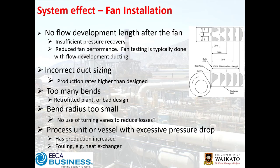Looking at the velocity profile right at the outlet of a fan, it's not uncommon on some fans to have a 10-to-1 ratio — perhaps 40–50 metres per second at the top and 4 or 5 at the bottom, and in some cases slightly negative flow. If you don't allow good flow development after the fan, that dynamic head in the high velocity air doesn't get fully recovered — it gets wasted, and the fan performance is somewhat less than expected.